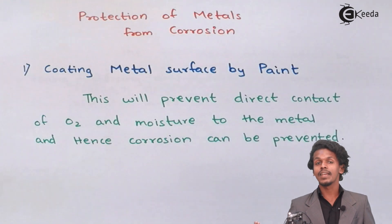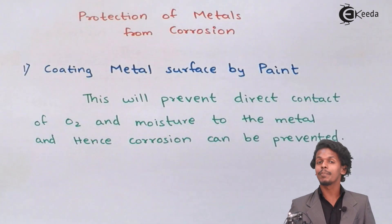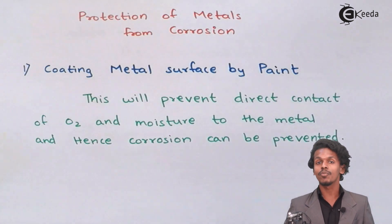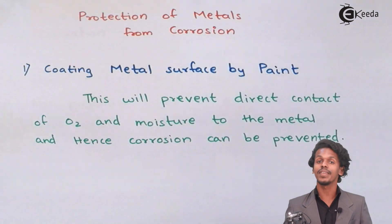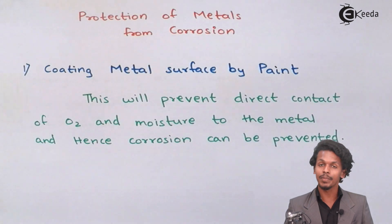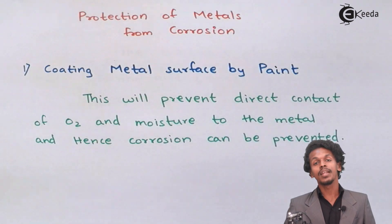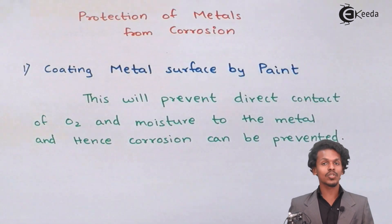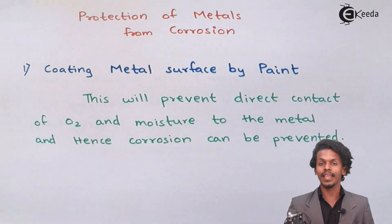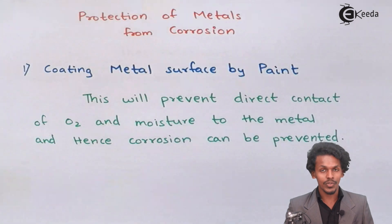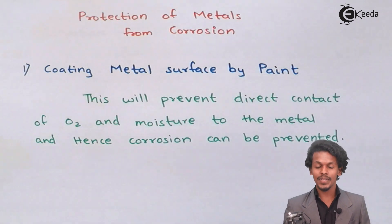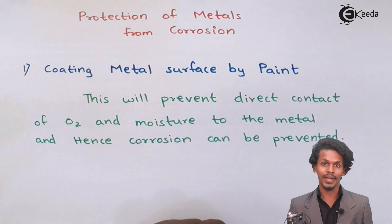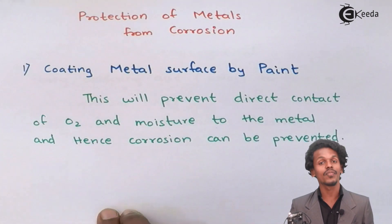This creates a possibility that the rusting process is still going on, and we have to apply the paint again or do some other treatment to protect the metal. Painting is one of the cheapest and most common methods applied to prevent corrosion.